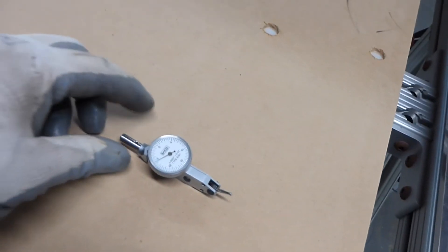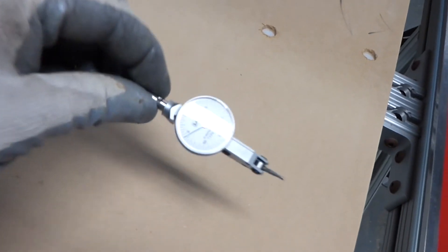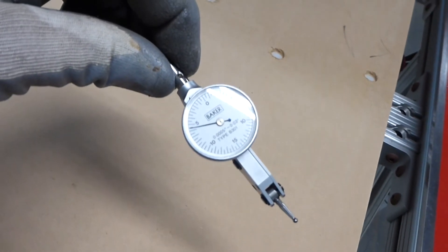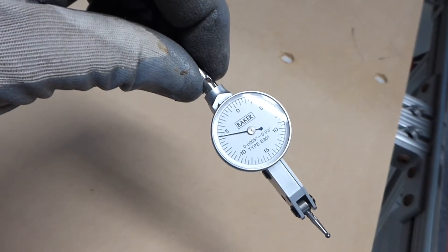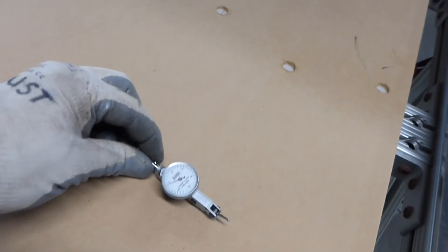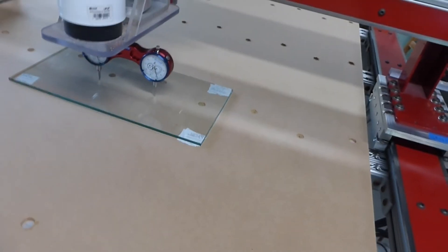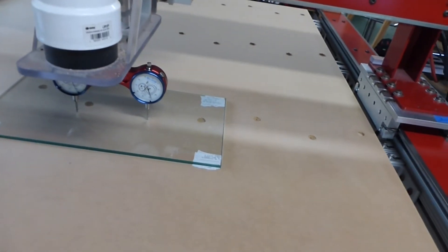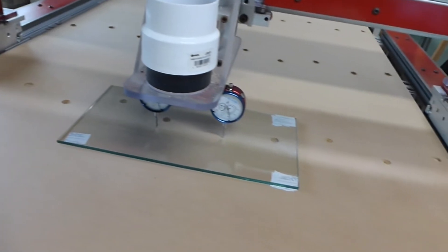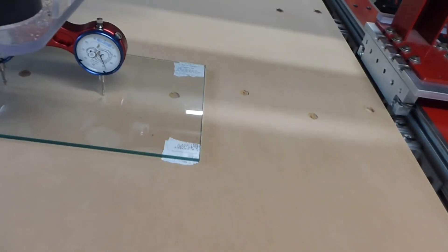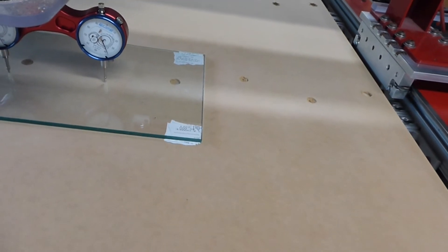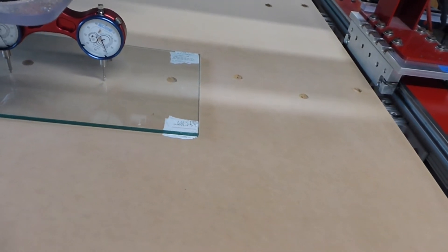I used this really fine dial indicator here. This one is in 10 thousandths. I actually noticed when I was going from one side of the glass to the other, I could see the deflection in the middle when I had it supported by these little standoffs on the end.